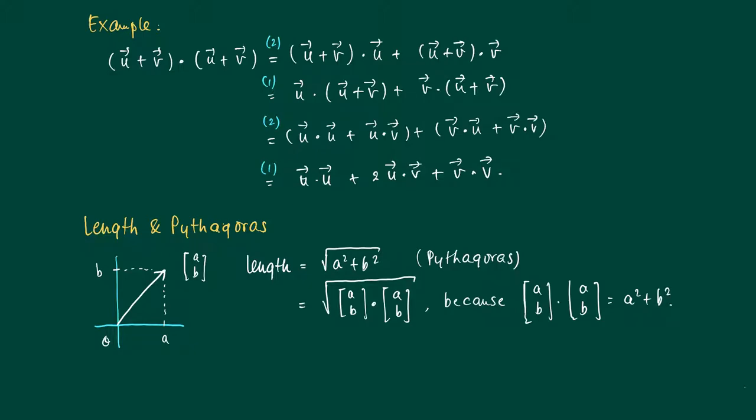So the length is the square root of the squared coordinates. This we will take as a definition of length in Rⁿ. So the length or norm of a vector—the length is the same as the norm of a vector.